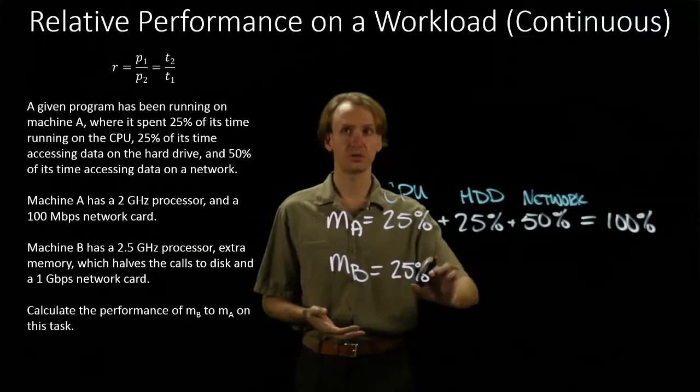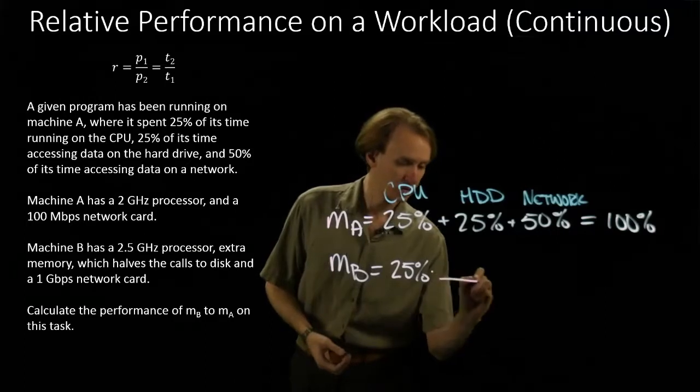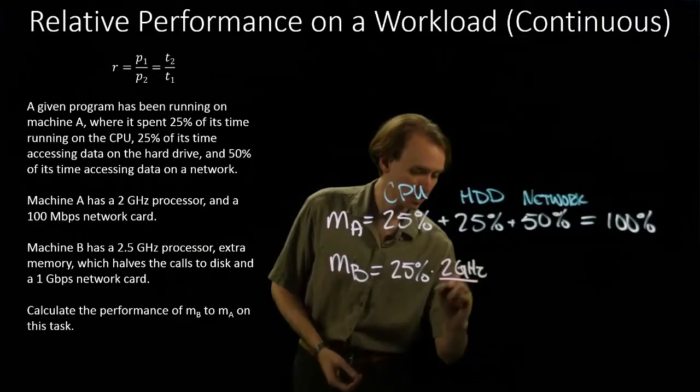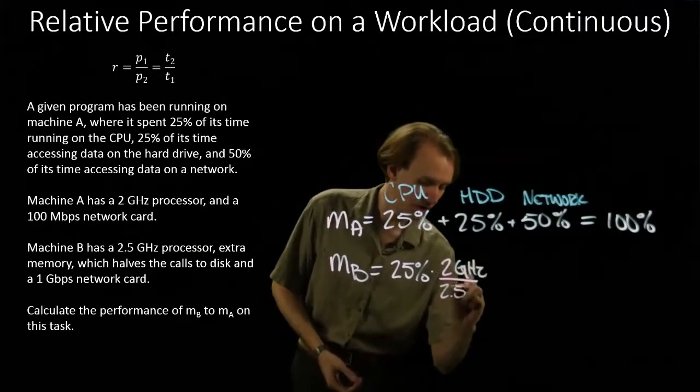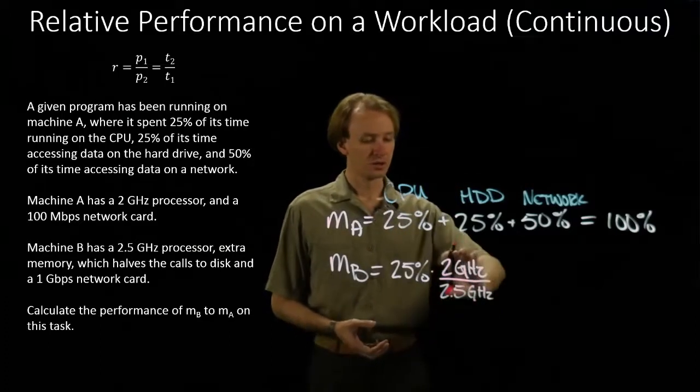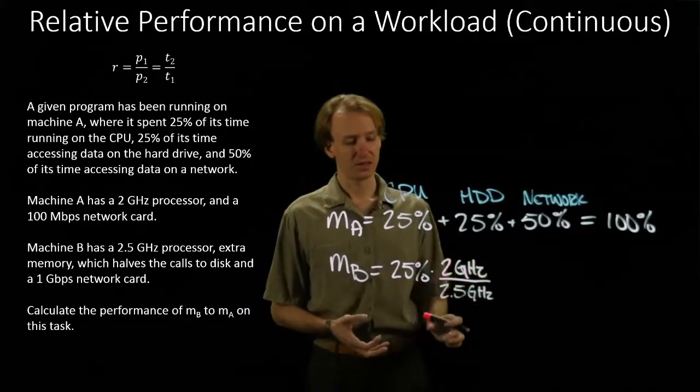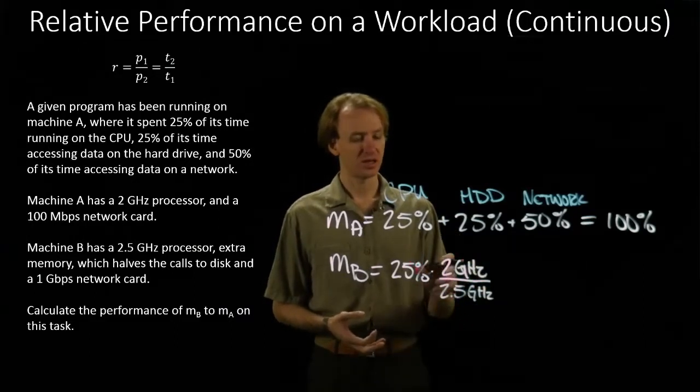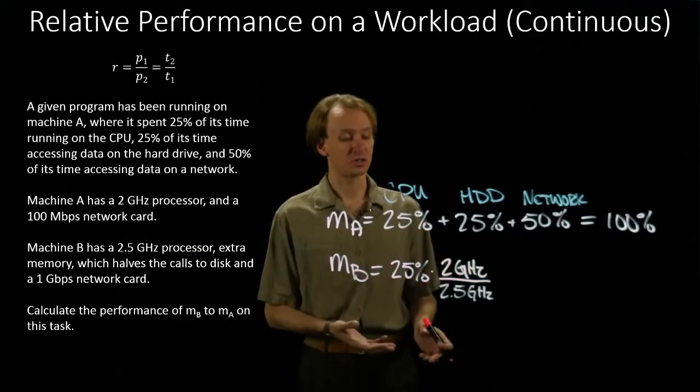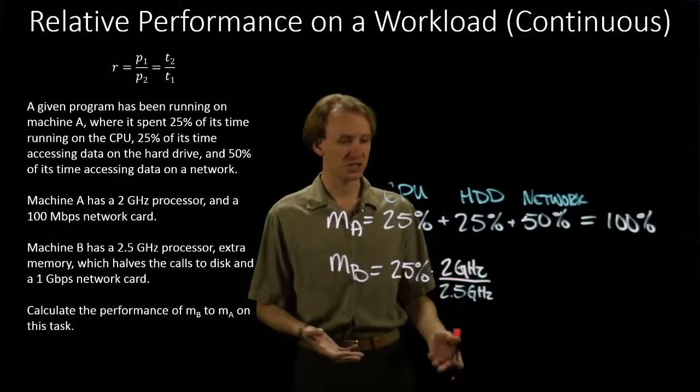So I'm going to put these into another relative performance ratio. And I'm going to put the 2 GHz processor on the top and the 2.5 GHz processor on the bottom. So I'm going to say that machine B takes about 80% as much time as machine A did to run the CPU instructions. So I can reduce this to 4 fifths, which is 80%.